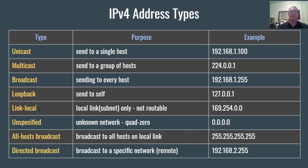A link-local address is another special type of address. Whatever the network is, it's not routable — it can only stay on that local network space. That address is 169.254.0.0. If it starts with 169.254, it's considered link-local and can only work on the link with other addresses that start with 169.254.